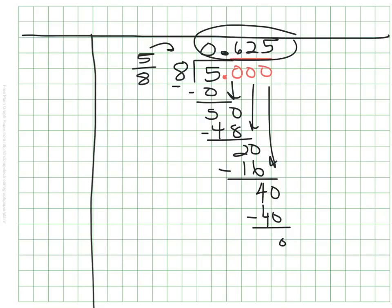My quotient is the decimal equivalent. So, 5/8 is equivalent to 0.625, or six hundred twenty-five thousandths. Those two values are equivalent.